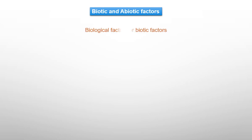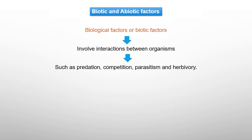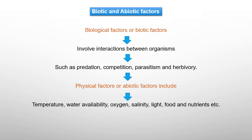To summarize: biological or biotic factors involve interactions between organisms in the form of predation, competition, parasitism, and herbivory. Physical or abiotic factors include temperature, water availability, oxygen, salinity, light, food, and nutrients.